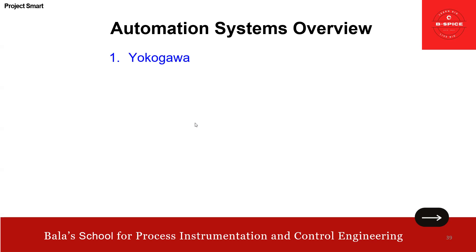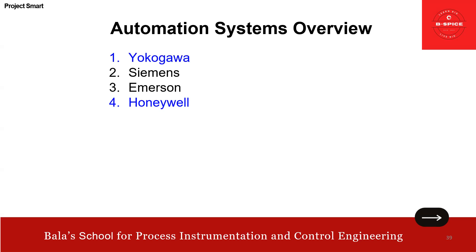Automation system overview — Yokogawa extensively covered already. Siemens and Emerson are to be taken up. Honeywell covered to some extent. In the long term, I'm planning to have my own physical school of engineering where students and freshers can come and have hands-on with all these systems. That's my future plan. ABB is also in the list.